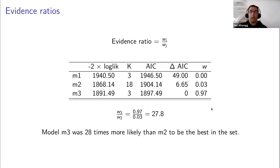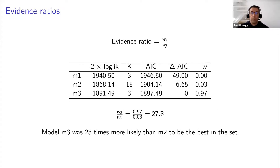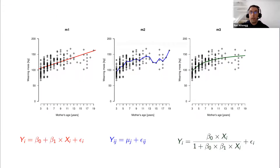If one model is maybe just twice as good as the second best, you have much less strong evidence for it being the best. In this case we have very strong evidence for M3.